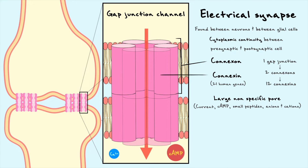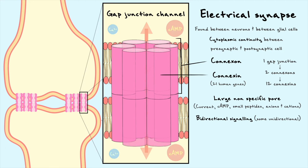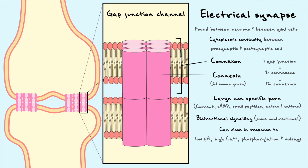Because the cytoplasm is continuous through these gap junctions, signaling in electrical synapses can be bidirectional. However, due to the diversity of connexins, some gap junctions only allow flow unidirectionally. Gap junction channels aren't always open — most can close in response to a low pH, elevated calcium, phosphorylation, or voltage, depending on the type of gap junction.